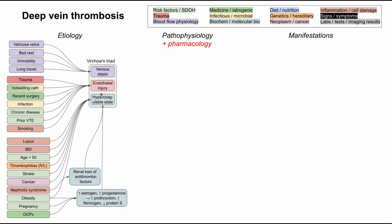Smoking has been shown to be inflammatory and cause endothelial injury. The biggest group is hypercoagulable state. Several conditions make a person's blood hypercoagulable, including inflammatory diseases like lupus and inflammatory bowel disease — ulcerative colitis and Crohn's disease. Being young, under 50 years old, predisposes you to hypercoagulability, mainly because women in their reproductive years tend to have higher estrogen and progesterone, which increase procoagulant proteins. Heritable and genetic causes include thrombophilias like factor V Leiden. Strokes and cancer can also make you hypercoagulable. In nephrotic syndrome, you lose antithrombotic factors through the kidney — you excrete proteins including factors that break down clots — resulting in a hypercoagulable state.